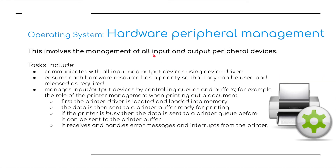Hardware peripheral management involves the management of all input and output peripheral devices. Tasks include communication with all input and output devices using device drivers, and ensuring each hardware resource has a priority so it can be used and released as required. It manages input and output devices by controlling queues and buffers. For example, the role of printer management when printing a document: first the printer driver is located and loaded into memory, the data is sent to the printer buffer ready for printing, and if the printer is busy then the data is sent to a printer queue. It also receives and handles any error messages and interrupts — such as the printer being out of paper, out of ink, or having a paper jam.